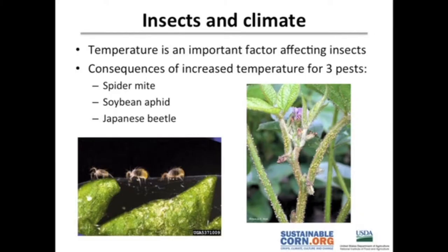Diseases can obviously be affected by weather, but the second pest category is insects. Insects can also be affected by temperature, and I'm going to go through three quick examples: spider mites, soybean aphids, and Japanese beetles.